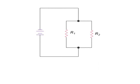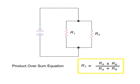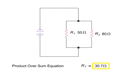Calculating the total resistance of resistors in a parallel circuit requires the use of the product over sum equation. In this parallel circuit, if R1 is 50 and R2 is 80, then the combined or equivalent resistance of the two resistors would be 50 times 80, or 4000 divided by 130, which is 30.7 ohms.